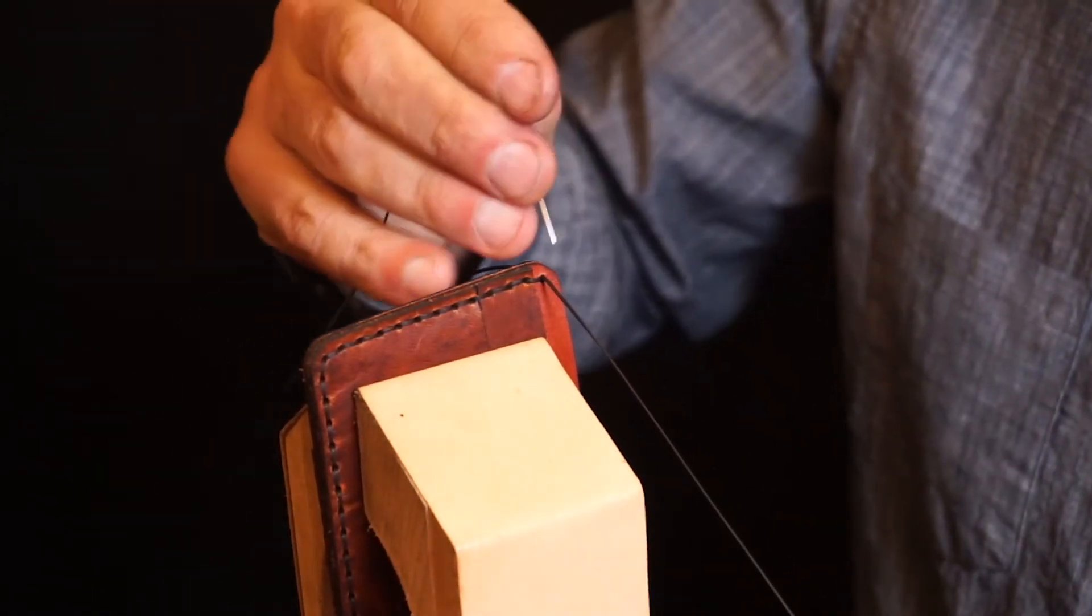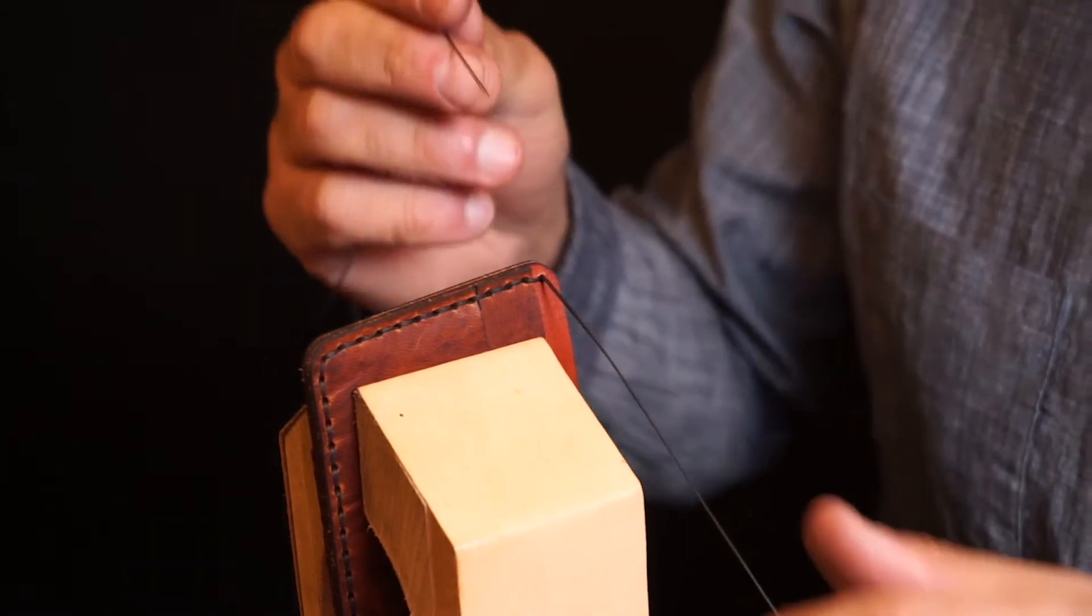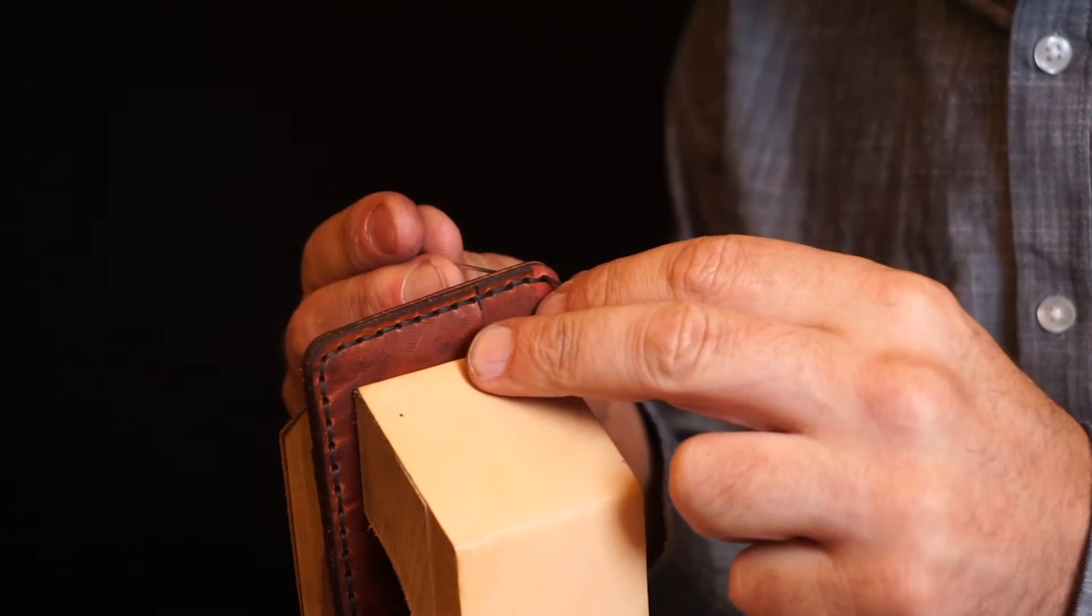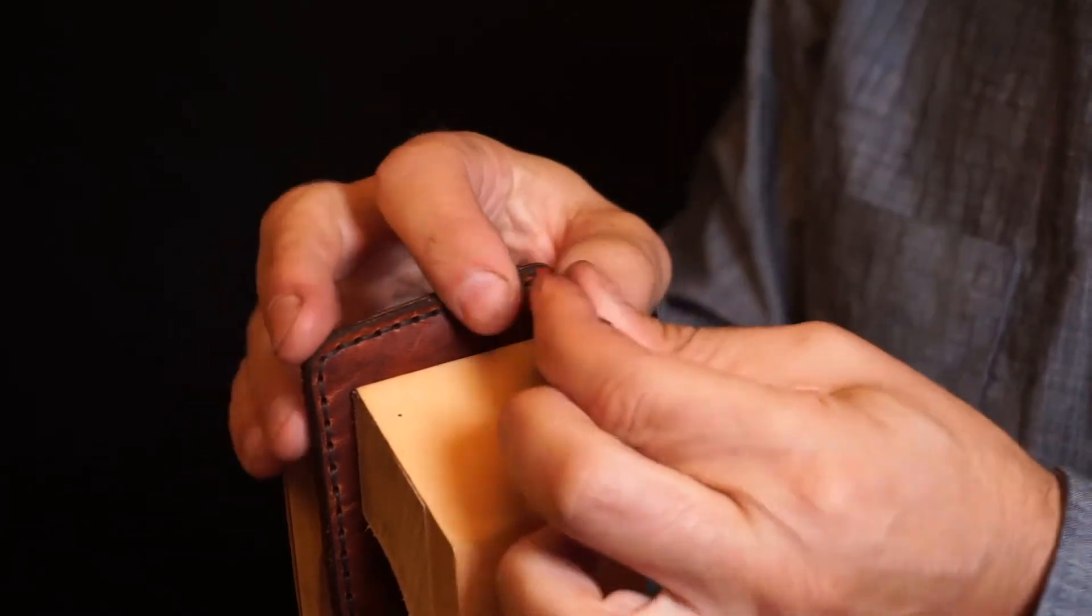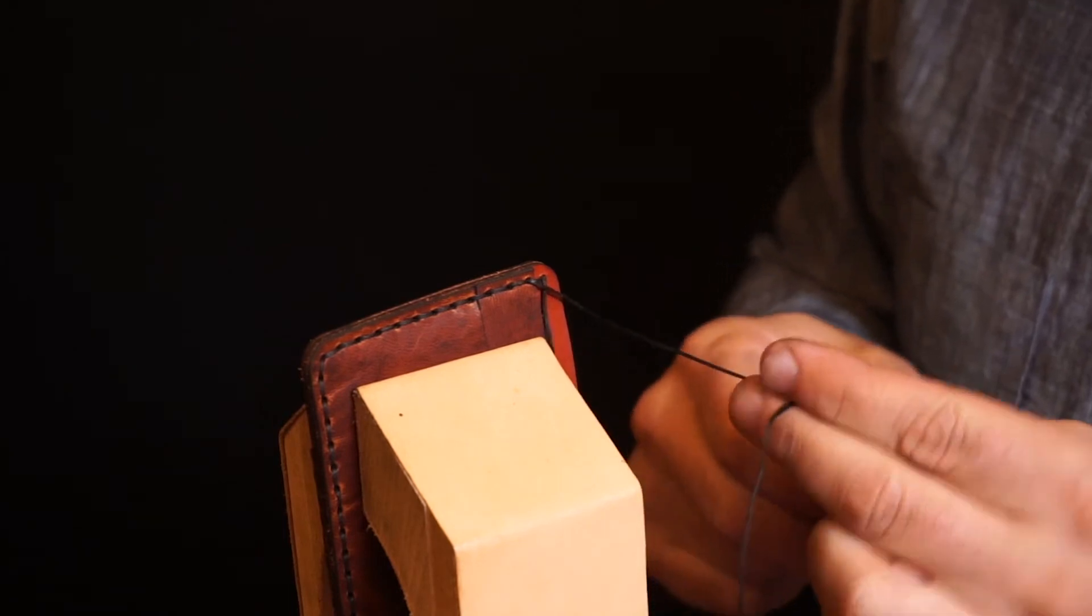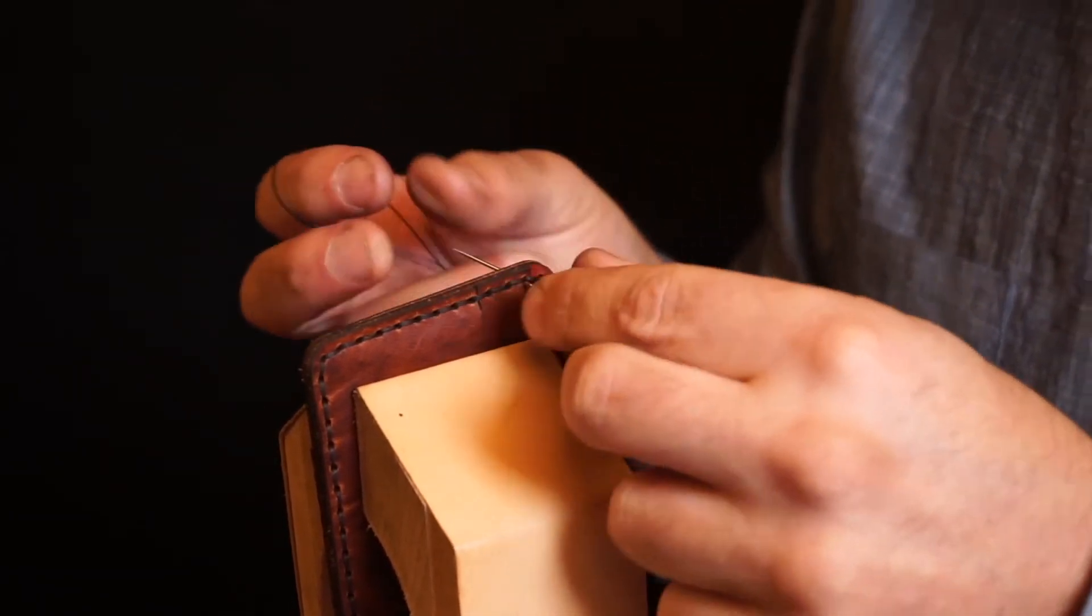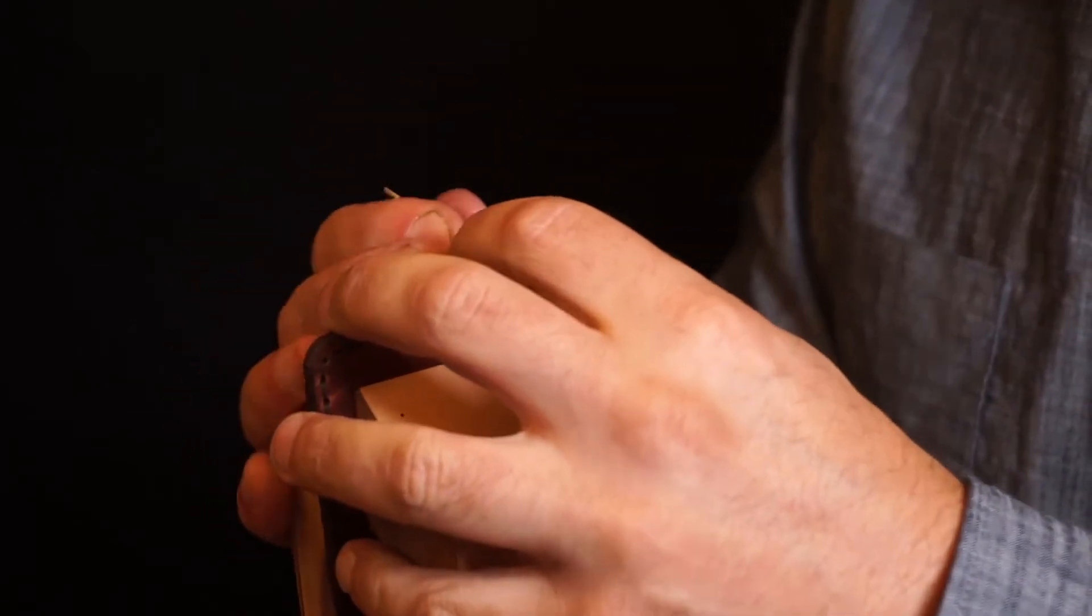Now we're back at the starting point. And we're going to backstitch two and a half stitches so both threads end up on the same side. Since we are using the same stitching holes to backstitch, it can be a little more difficult to pull the needles through. And if you need to, you can certainly use a pair of pliers if you need just a little bit more leverage.